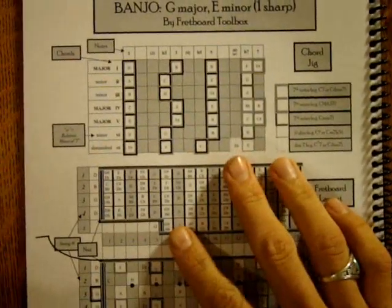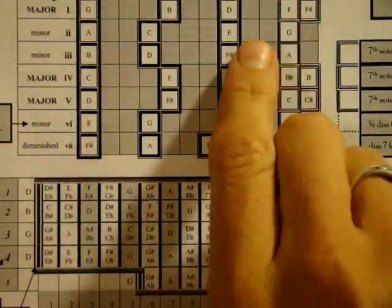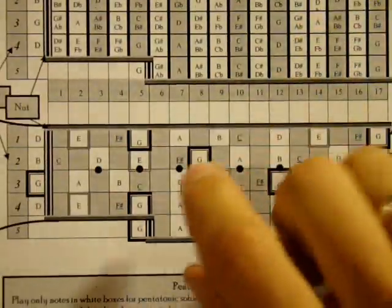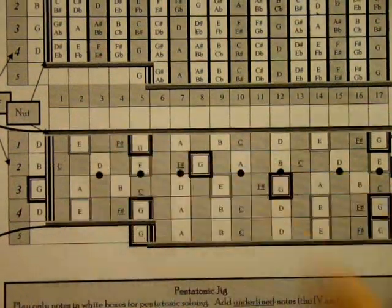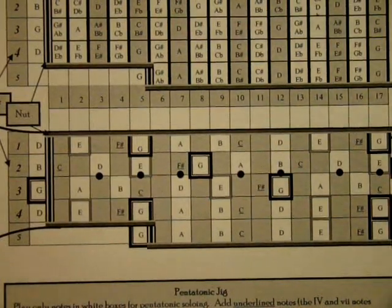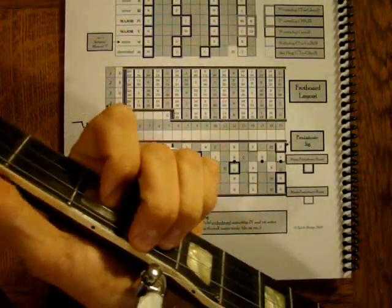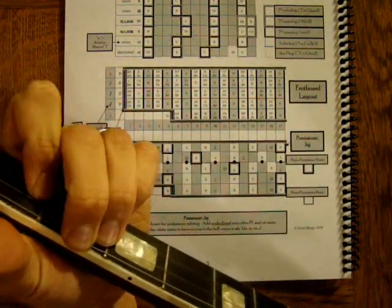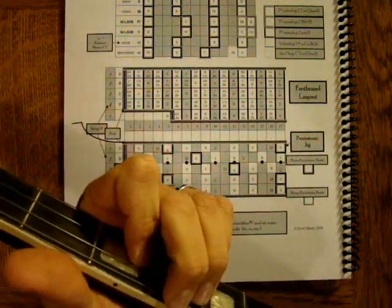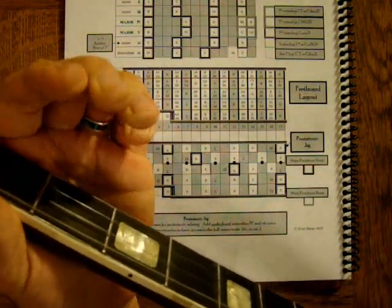A B minor chord is built out of the notes B, D, and F sharp. So if we wanted to play a B minor, we could use that same A minor position and just slide it up, and we'll only be playing Bs, Ds, and F sharps. So here we have F sharp, B, D, and F sharp.